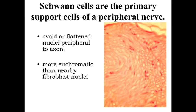Within the peripheral nervous system, we're going to have support cells similar to the glial cells within the central nervous system. These support cells in the peripheral nervous system are referred to as Schwann cells. These Schwann cells are going to be, in many cases, difficult to identify, except for the fact that we're going to see them associated with this wavy pattern of peripheral nerves and the axons that they're supporting. If we look at what we can see of these cells, they're going to have ovoid or flattened nuclei, which are peripheral to the axon, and by definition we're going to use this as an identifying characteristic of the Schwann cells.